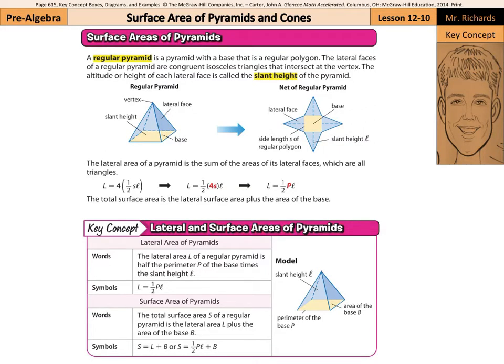Hello, Mr. Richards here. Today's lesson is on surface area of pyramids and cones. For surface area of pyramids, a regular pyramid is a pyramid with a base that is a regular polygon. The lateral faces of a regular pyramid are congruent isosceles triangles that intersect at the vertex.